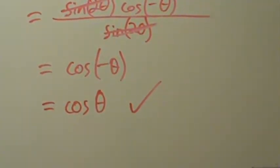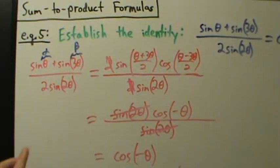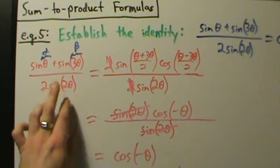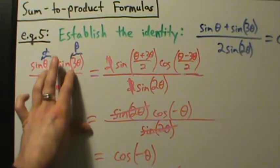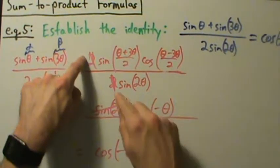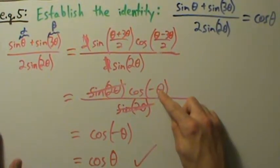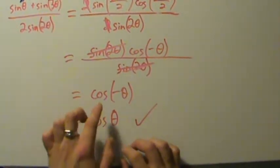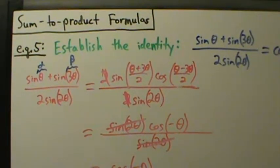Let's recap what happened. We had sine of something plus sine of something else, so we used the sum to product formula to see if it gets us anywhere — leaving the bottom alone and skipping the double angle formula. Using the sum to product formula gave us two sine of two theta times cosine of negative theta. The two canceled, sine of two theta canceled, and cosine of negative theta equals cosine of theta because cosine is an even function. That's example five of using sum to product formulas.